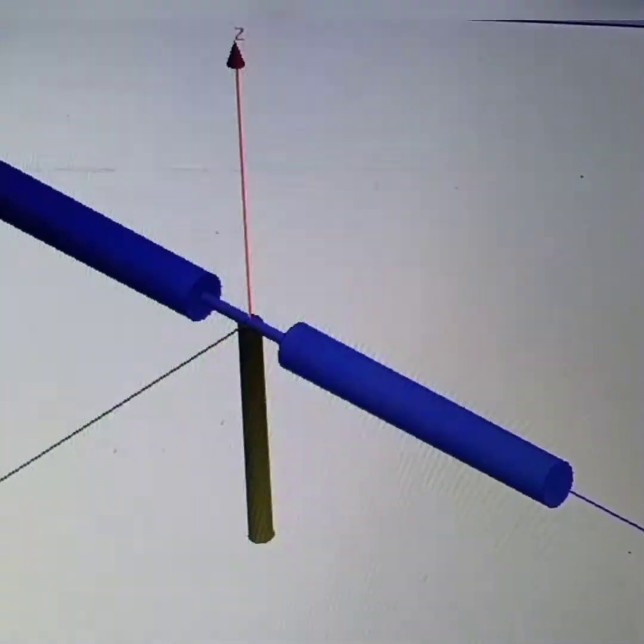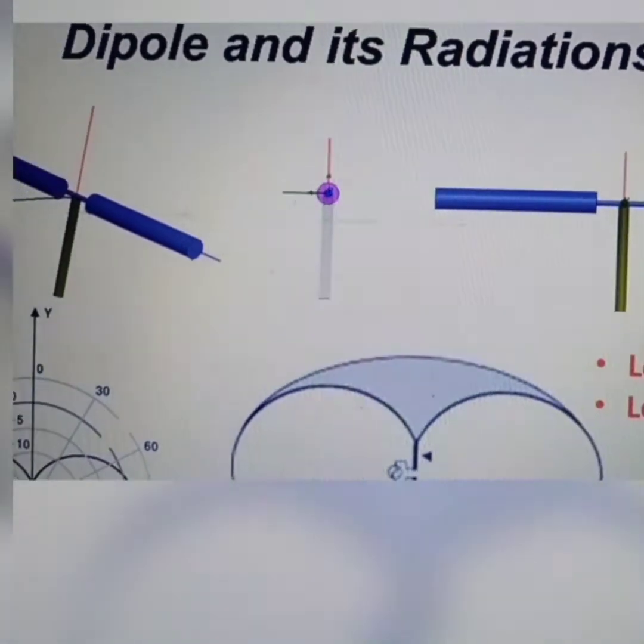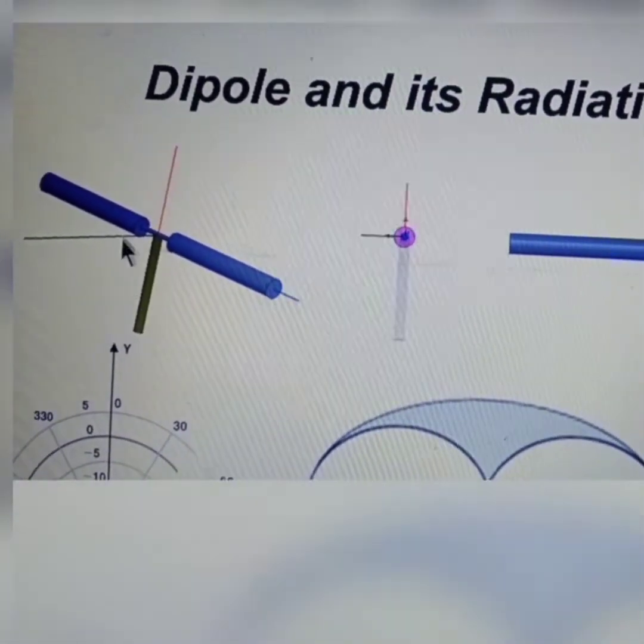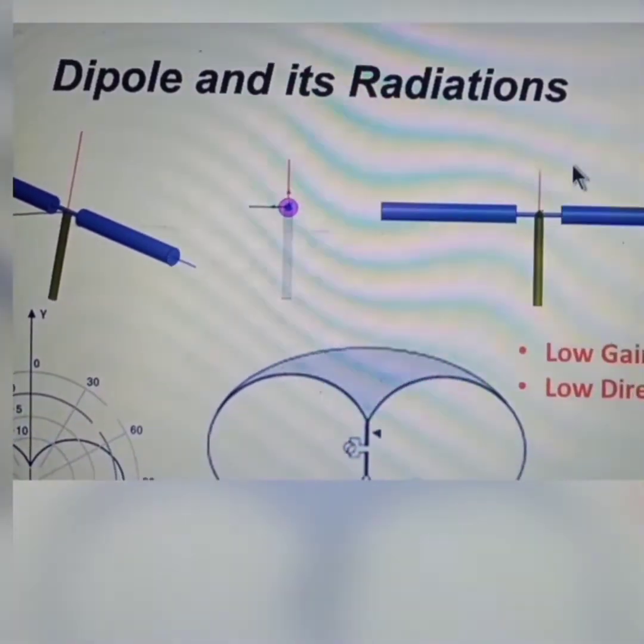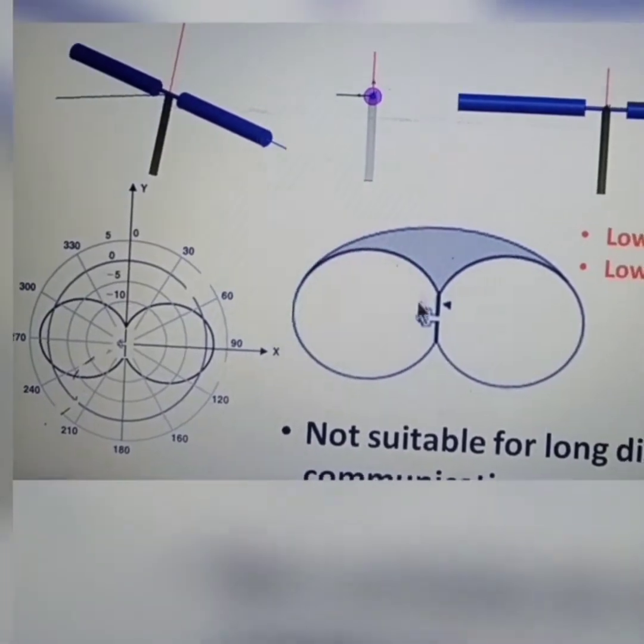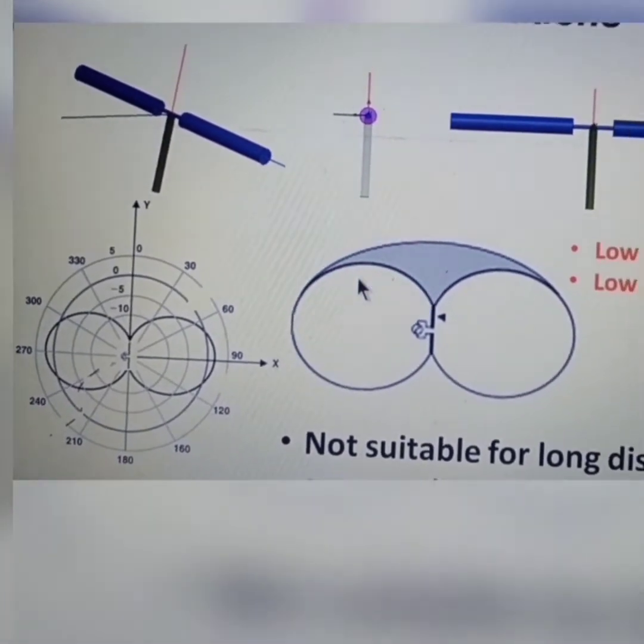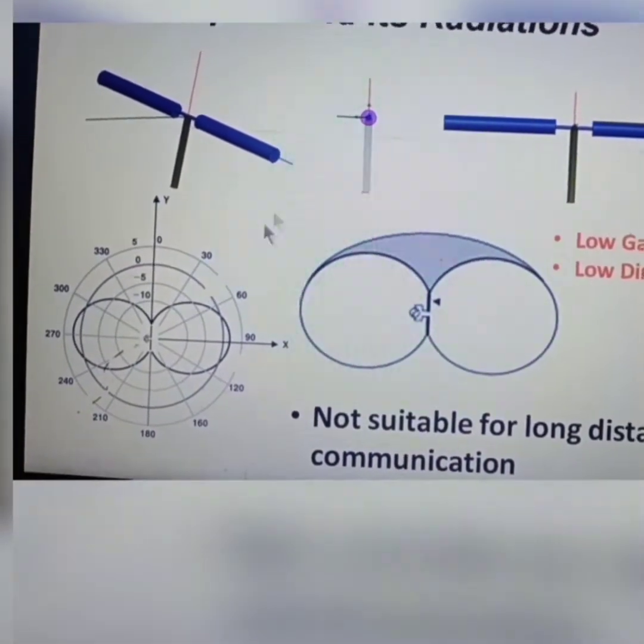So we need to enhance the gain and directivity. Here I am showing the lambda by two dipole. And the dipole seen from side view, it is looking like a point source. And the radiation characteristics, it is a figure of eight, as we all know, or donut shape. It is radiating in a particular plane. So as I told, it is low gain and low directivity.